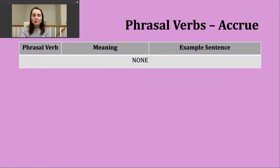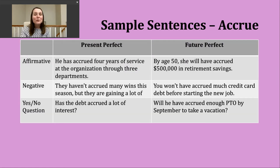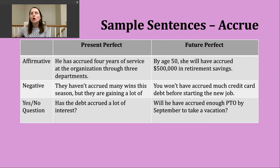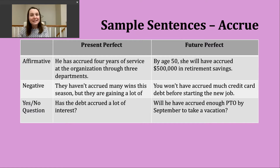There aren't any phrasal verbs to study, so we'll focus on verb tense practice today — specifically the present perfect and the future perfect. Let's start with the present perfect. We use this verb tense to talk about an action that started in the past and continues into the present, or to describe an action that occurred at some unknown point in the past. To make the present perfect, I need two parts: have or has, depending on the subject, and then the participle form of the verb.